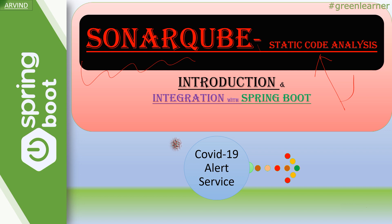In this video, I'm going to introduce SonarQube, its documentation, how you can set it up locally, and how you can integrate it with Spring Boot microservices. There is also a code coverage matrix — you can combine code coverage from different microservices and different projects into a single SonarQube dashboard, so you can see everything in one place. Let me show you what SonarQube is and how it's helpful for us.